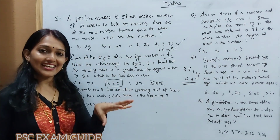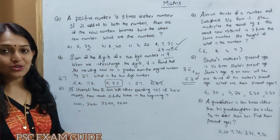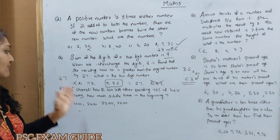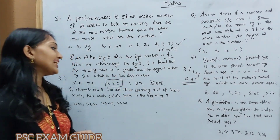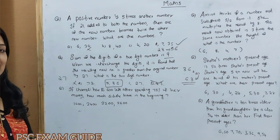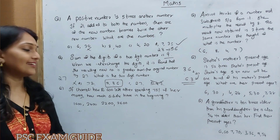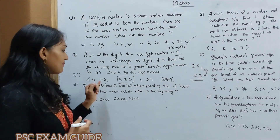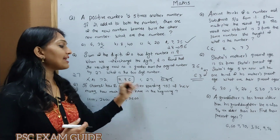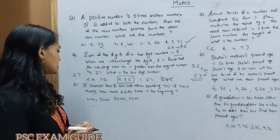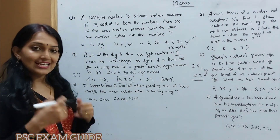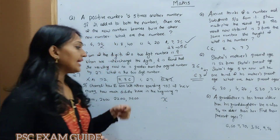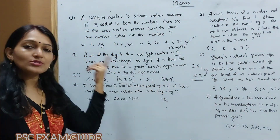If Chameli has 600 rupees left after spending 75% of her money, how much did she have in the beginning?